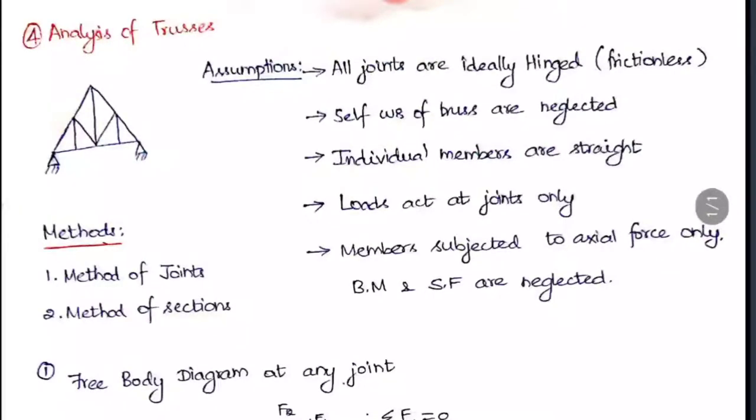If you assume the self weight of the members, again buckling or bending will happen. We would have to calculate the shear force and bending moment also. To avoid all those things, we are avoiding the self weight of the truss.